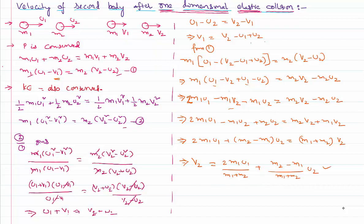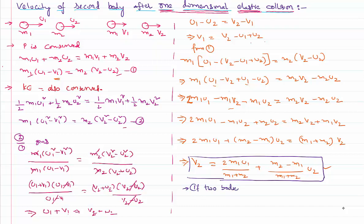That's the equation I wanted to derive — the final velocity v2 of the second body after a one-dimensional elastic collision. In this derivation, we have assumed that both bodies are moving in the same direction before the collision. If the bodies are moving in opposite directions, everything else remains the same — treat u1 as positive and u2 as −u2 in the equation, and you get the same result.